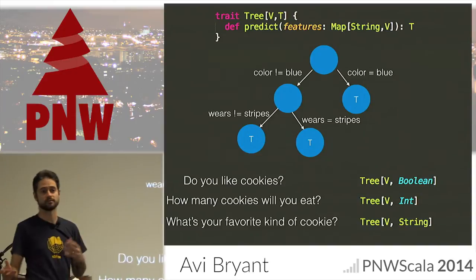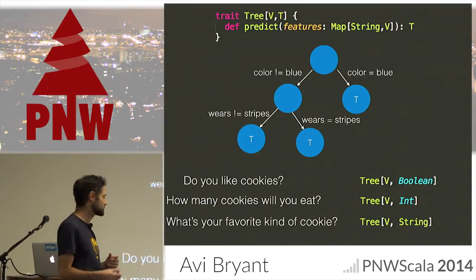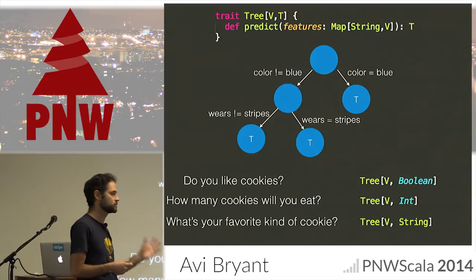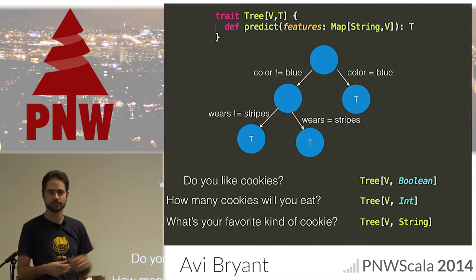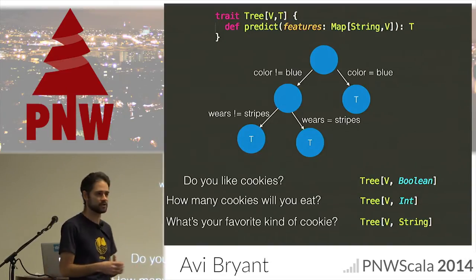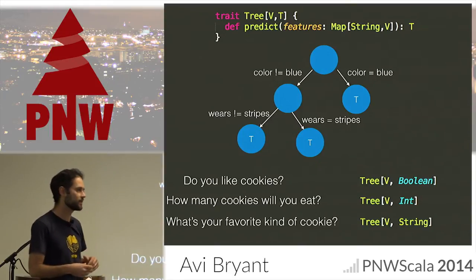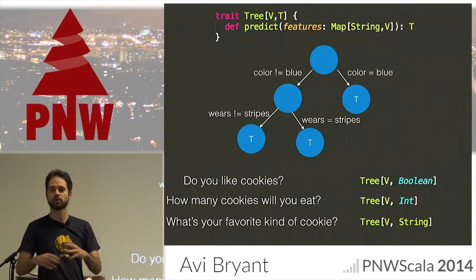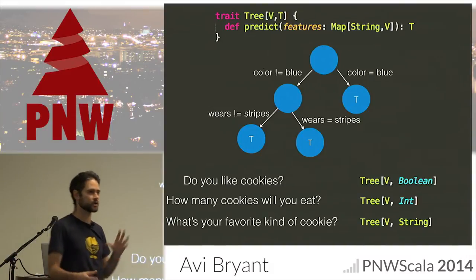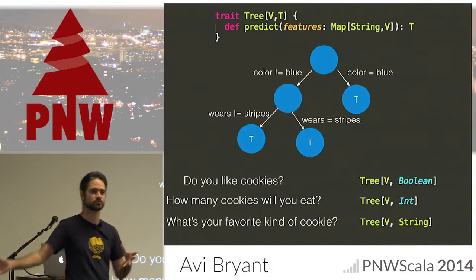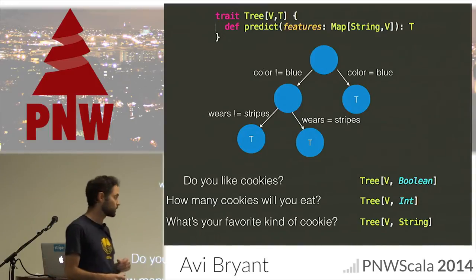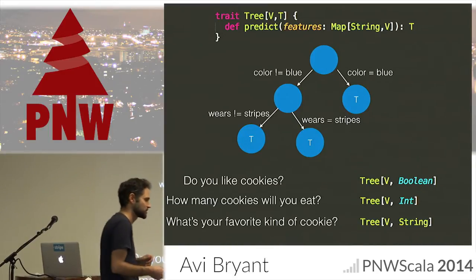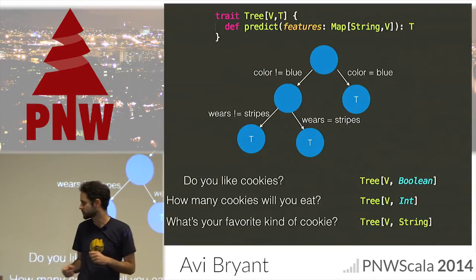You might also think about a regression — something that tries to answer questions like: how many cookies will you eat? So in the binary classifier case, you might have a Boolean as your prediction type. In a regression, you might have an integer or a double. Sometimes you have multi-class classifiers, where there might be a number of different discrete answers — like, what is your favorite kind of cookie? — and you might use a string as your prediction type.